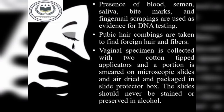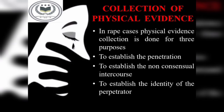Vaginal specimens are collected with two cotton swab applicators and a portion is smeared on microscopic slides, air dried, and packaged in a slide protector box. The slides should never be stained or preserved in alcohol. Evidence collection is done for three purposes. The first is to establish penetration — whether the rape actually happened or if false charges have been put against someone.